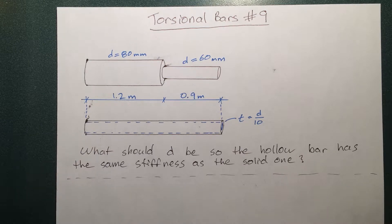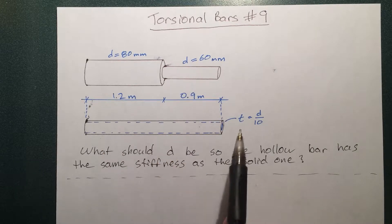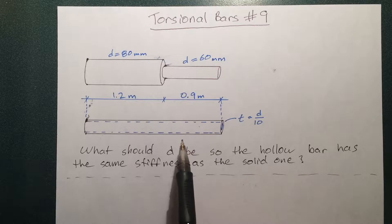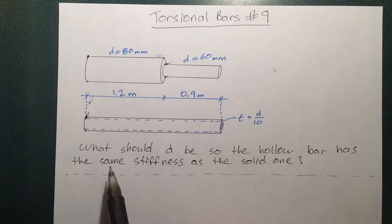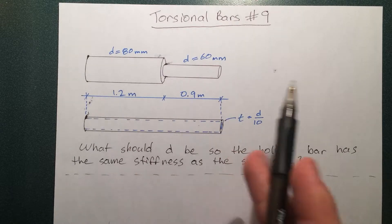Hi everybody, welcome to my ninth torsional bar video. In this video I'm going to be solving the problem that you see here. I'm going to find what does D, the diameter of the hollow piece, need to be so that it has the same stiffness, torsional stiffness, as the solid bar here.